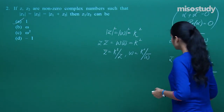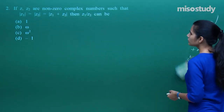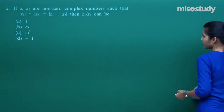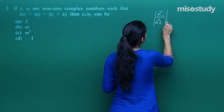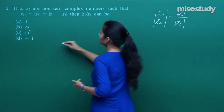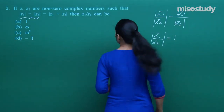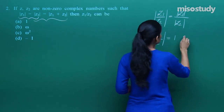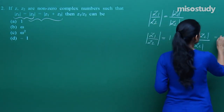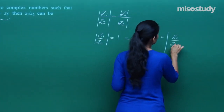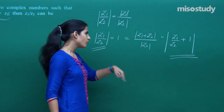Moving on to the next question: if z₁ and z₂ are non-zero complex numbers such that |z₁| = |z₂| = |z₁ + z₂|, then z₁/z₂ can take what values? You need to understand that |z₁/z₂| = |z₁|/|z₂|. So, given the condition, this means |z₁ + z₂| / |z₂| = 1, which can be written as |z₁/z₂ + 1| = 1.